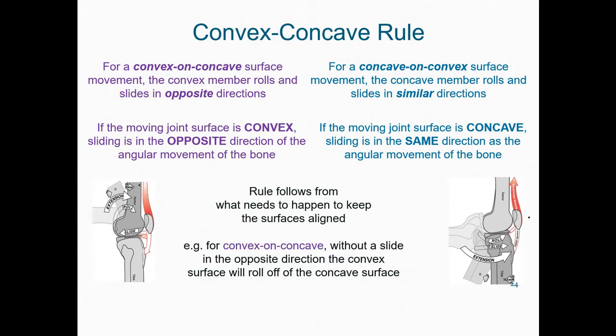The convex-concave rule follows from what needs to happen to keep the articular surfaces aligned. For example, for convex on concave surface movements, without having a slide in the opposite direction, the convex surface will roll off of the concave surface.